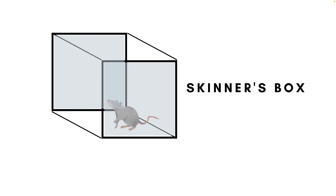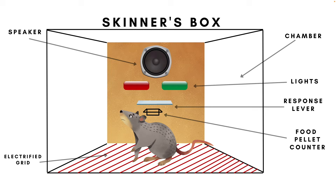A Skinner's box contains various elements to help test the predictions of Skinner's theory. More specifically, it contains a lever for rats or a disc for pigeons, allowing the animal to press or peck them to receive a reward such as food via a dispenser. Speakers and lights can be associated with certain behaviors as cues for rewards or punishments, and a recorder accounts for the number of responses the animal makes.